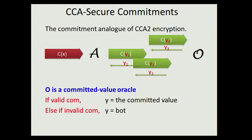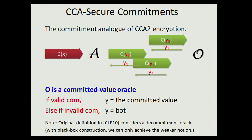By 'breaking', we mean that for every commitment the adversary sends to the oracle, the oracle returns back the committed value if it's valid; otherwise it gives bottom. I want to note that this formulation is slightly different from the original definition in KP10 — there they consider a stronger oracle that also gives the decommitment information besides the committed value. The reason we consider this weaker oracle is that in order to get a black box construction, we can only achieve this weaker notion. But luckily, as we show in the paper, this weaker notion also suffices for building concurrently secure protocols.